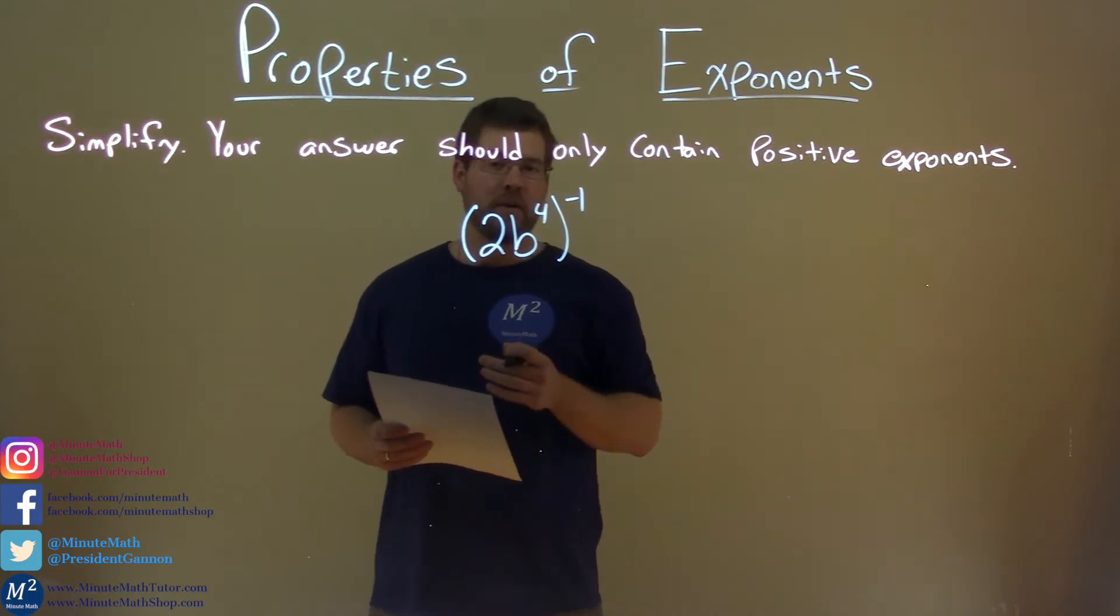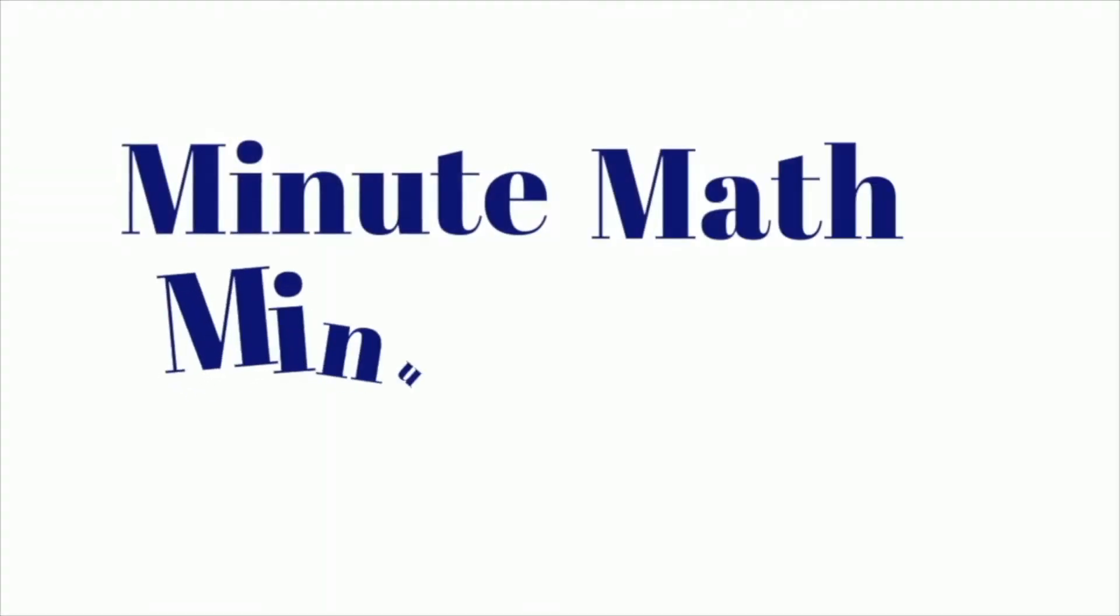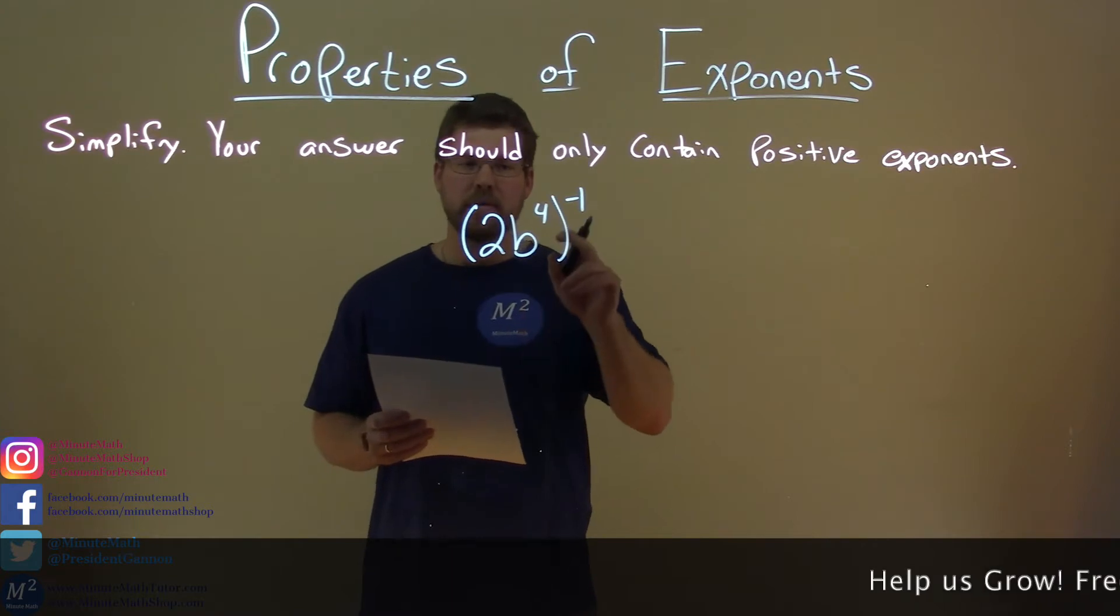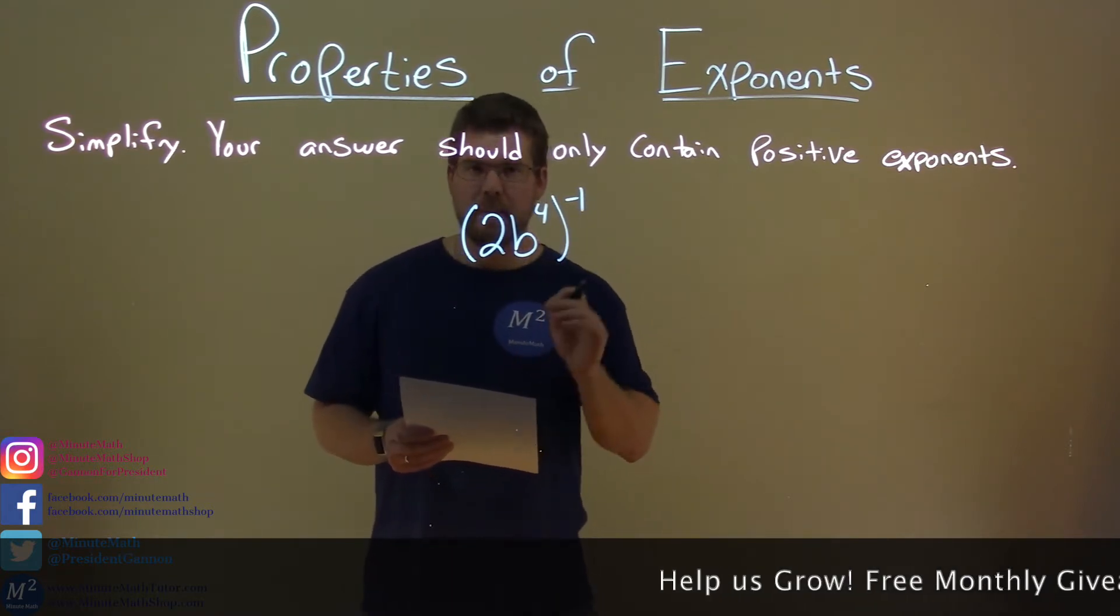And so we need to simplify this problem: 2b to the fourth power, all to the negative one power.